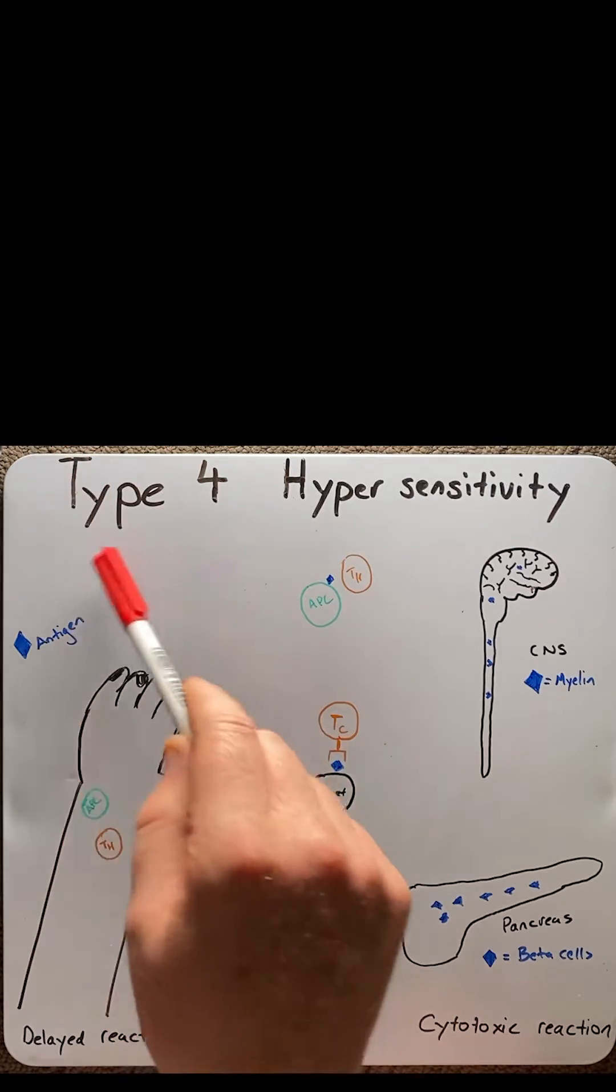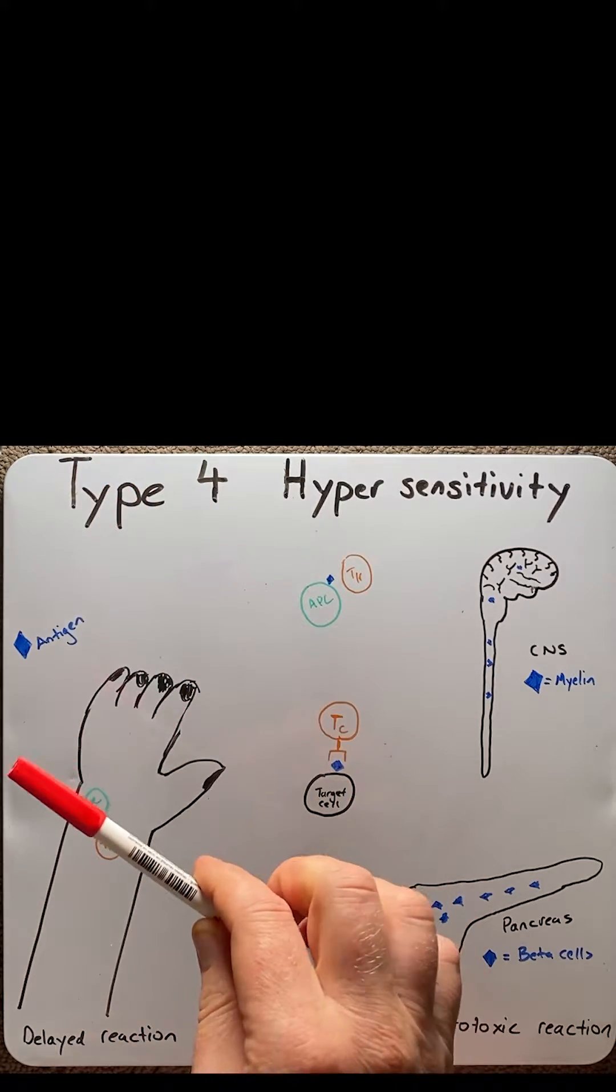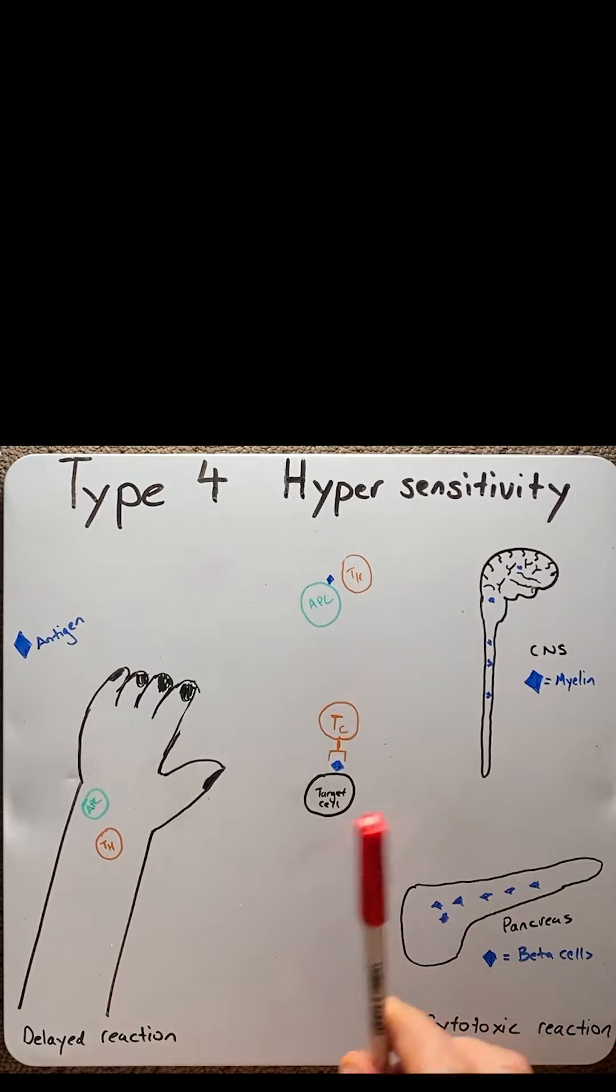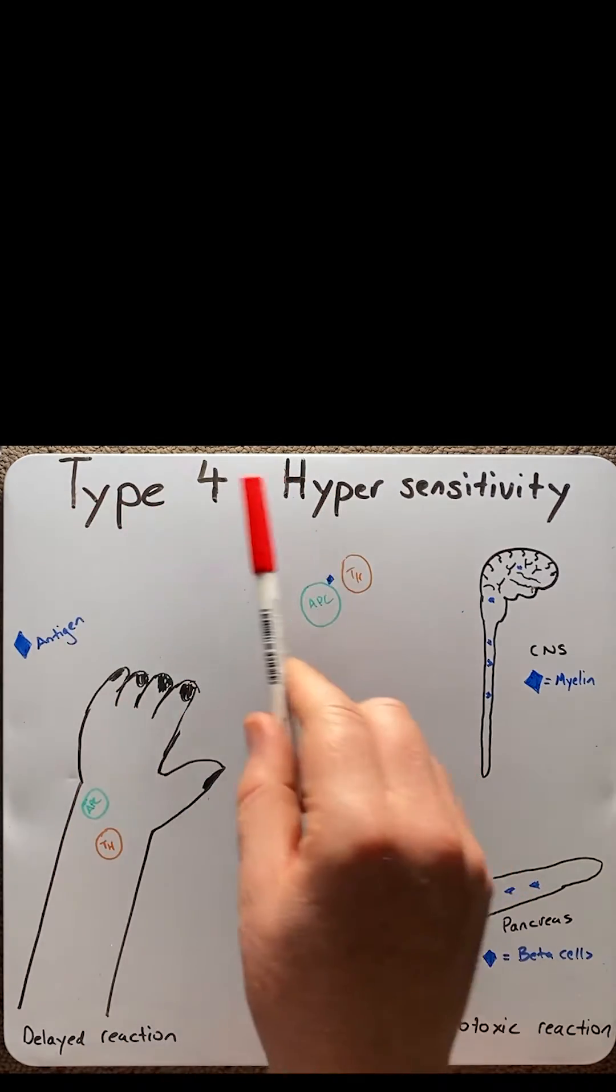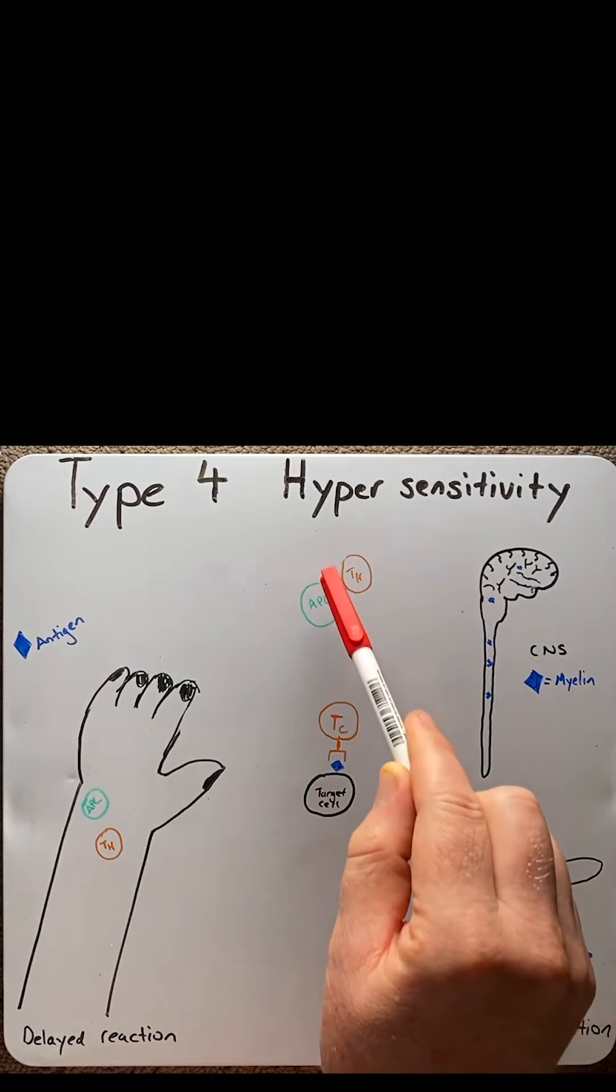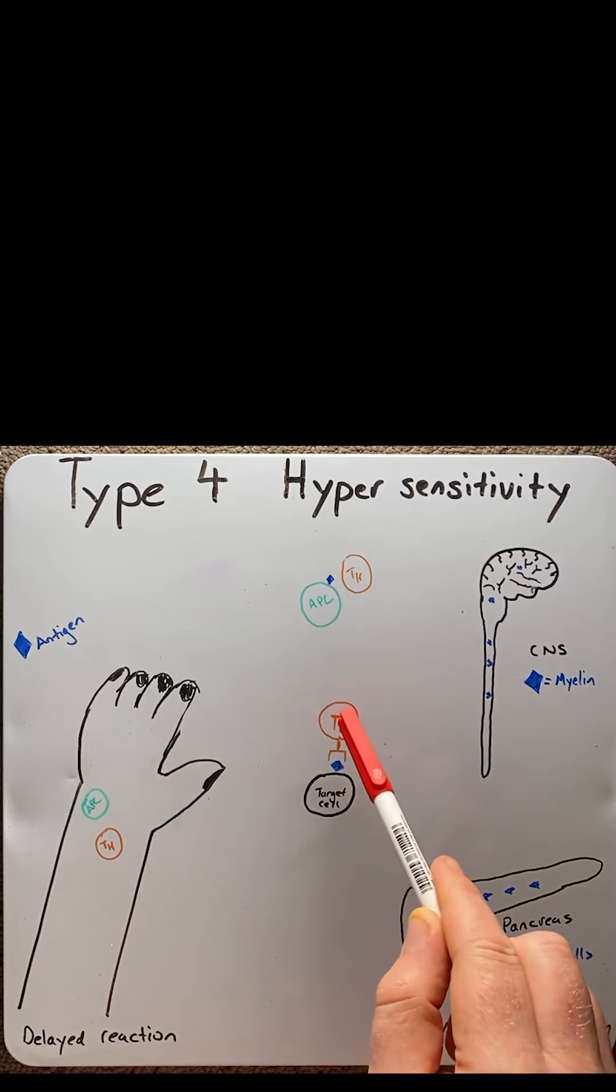Now, in type 4 reactions, these are comprised of a spectrum of severity from mild to severe. So, here I've broken type 4 reactions into two categories: delayed reactions, which usually just involve T-helper cells, and cytotoxic reactions, which use both T-helper cells and cytotoxic T-cells.